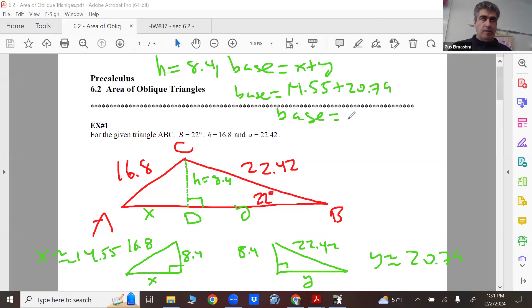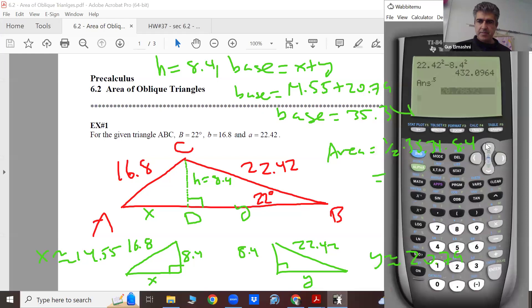Which is 35.34, is that right? 35.34. Okay, so the area is easy. One half times 35.34 times 8.4, divided by two, times 8.4. Yeah, about 148.4.